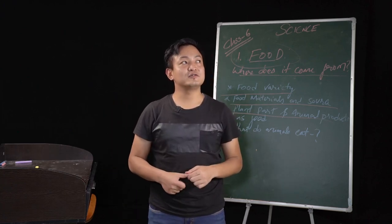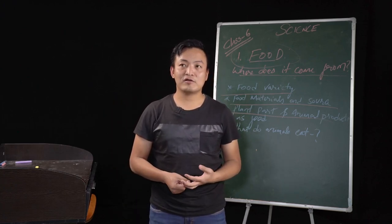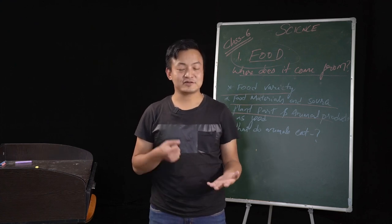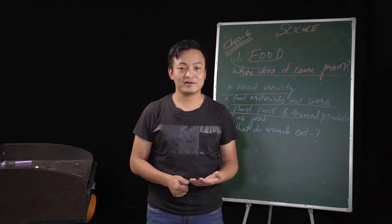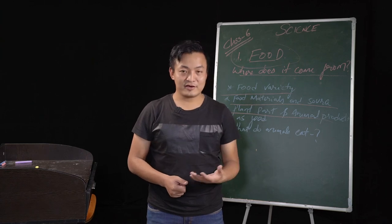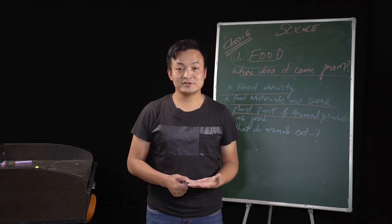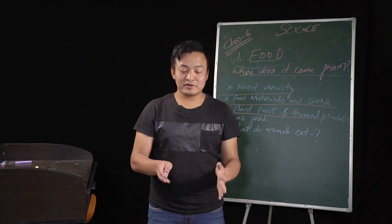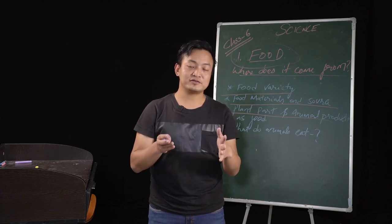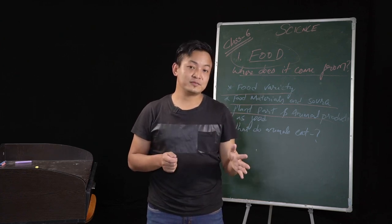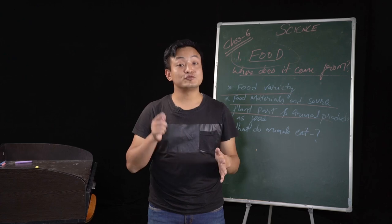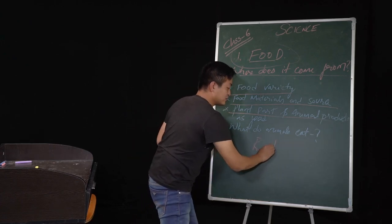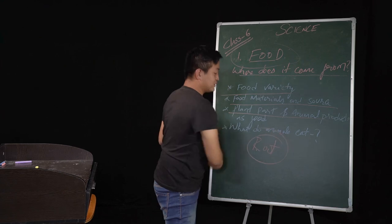Now let's talk about radish or carrot. Carrot is a good source of vitamin A. Carrot and radish — which part do we consume? That's the root. The root.